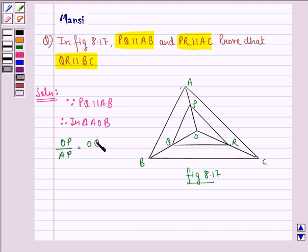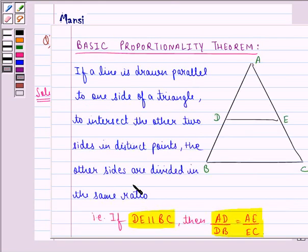Because from the basic proportionality theorem, we get that if a line is drawn parallel to one side of a triangle to intersect the other two sides in distinct points, the other sides are divided in the same ratio. That means if a line DE is parallel to BC of triangle ABC, then AD by DB is equal to AE by EC.